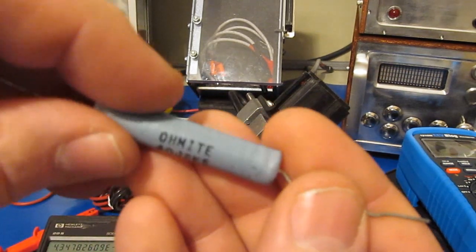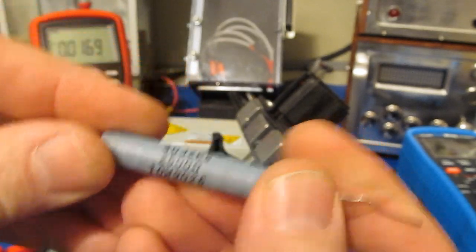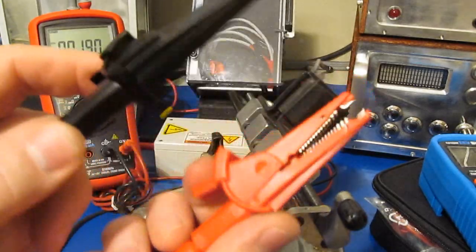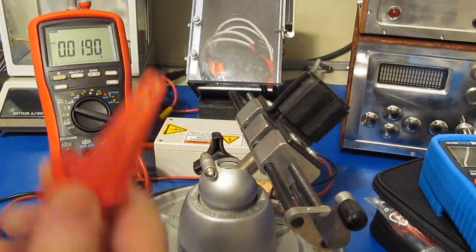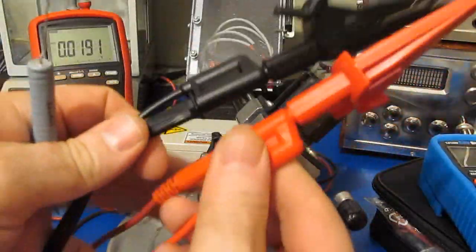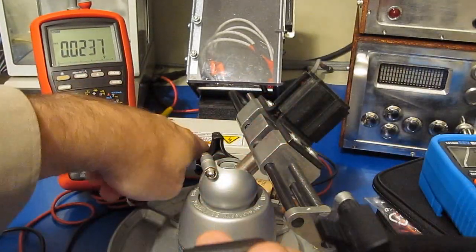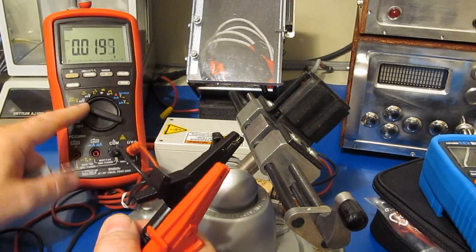So what I have here, this is an Ohmite part, and we can see that this one is rated for 2500 ohms. So I have a high voltage power supply attached to these two clips here. This is our positive and our ground.